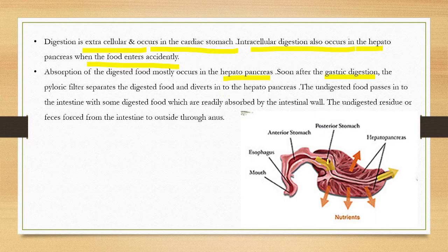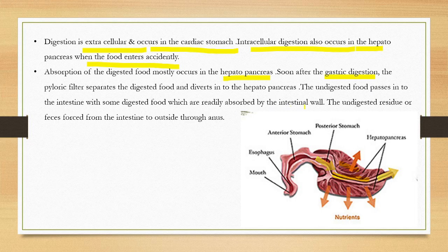Digested food is directed into the hepatopancreas for absorption. Undigested food passes into the midgut (intestine). Some digested food is also absorbed by the intestine. The undigested residue or feces passes through the rectum and is expelled via the anus.